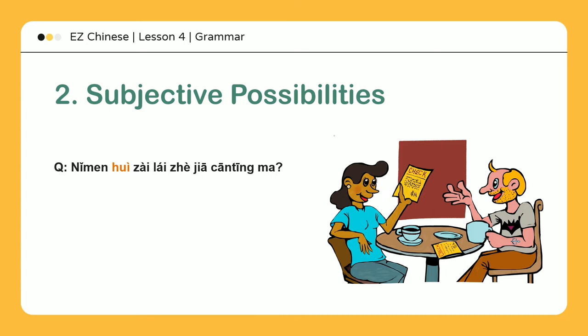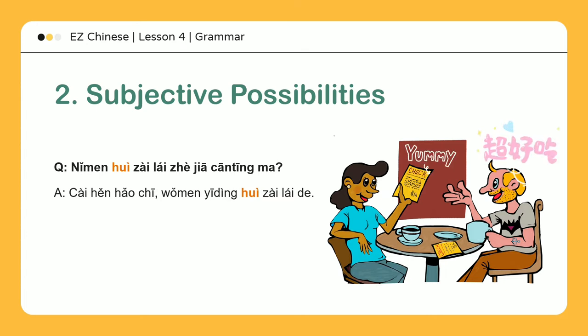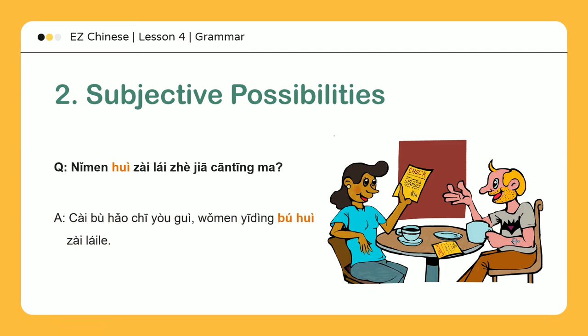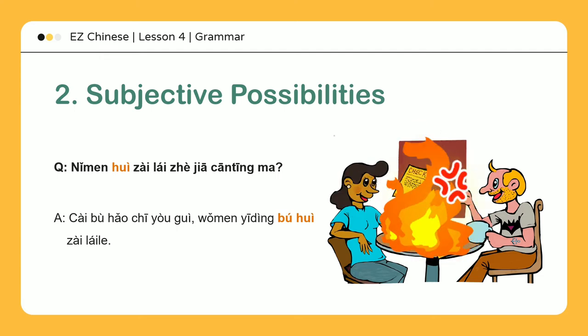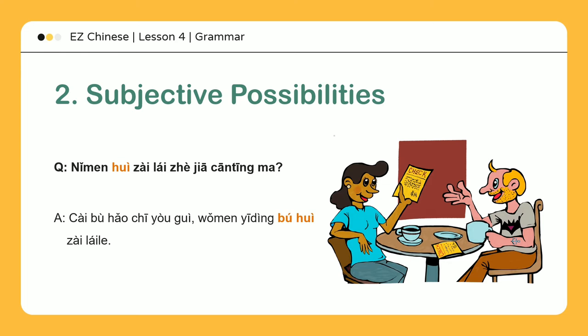会再来: 你们会再来这家餐厅吗? — Will you come back to this restaurant? 菜很好吃，我们一定会再来的 — The food is delicious, so we will certainly come back. 菜不好吃又贵，我们一定不会再来 — The food is bad and expensive, so we most certainly will not come back.